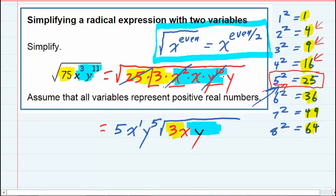So the 3, the x, and the y. I can't pull them out from the radical because they're not perfect squares. I've taken everything that was a perfect square out and left the others under the radical.